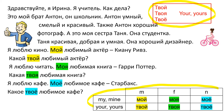So let's read. Здравствуйте! Я Ирина. Я учитель. Как дела? How are you? Это мой брат Антон. Он школьник. Антон умный, смелый и красивый. Also, Антон хороший фотограф. А это моя сестра Таня. Она студентка. Вот она. Таня красивая, добрая и умная.